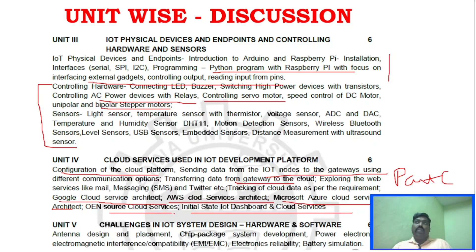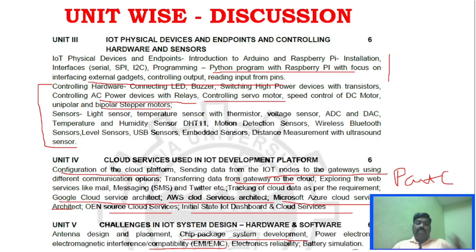In Unit 5, you need to go through chip package system development and EMC. To be on a safer side, also cover antenna design and placement — just go through those topics.